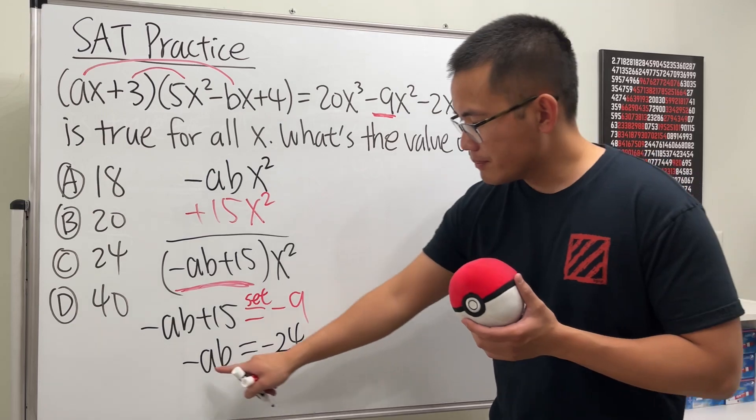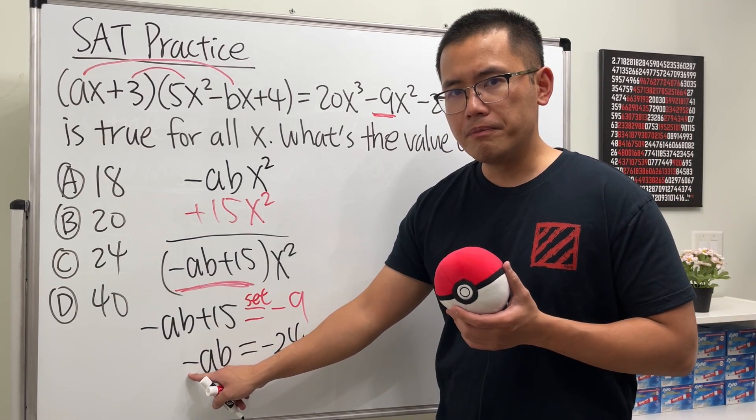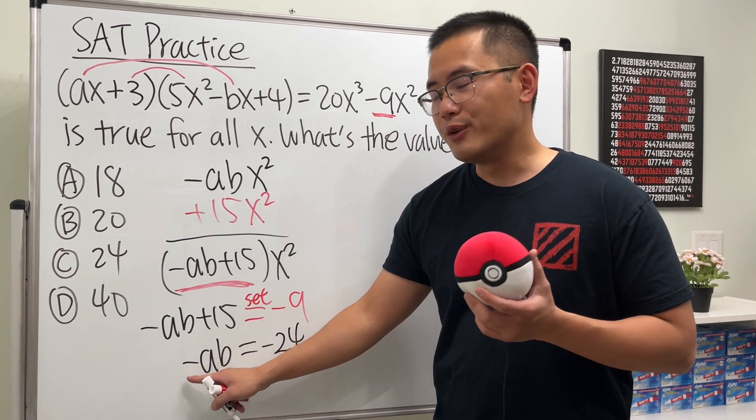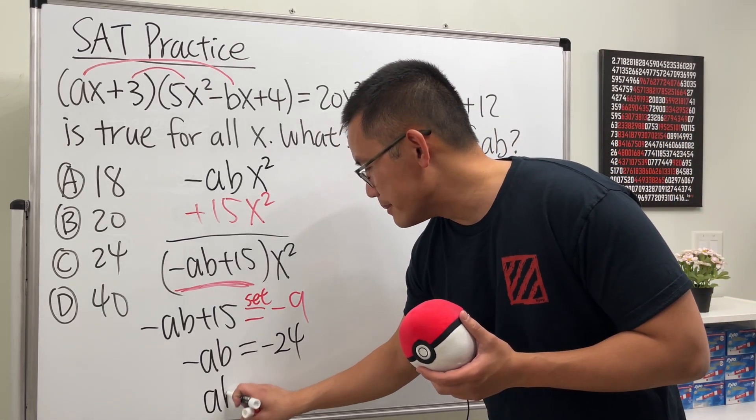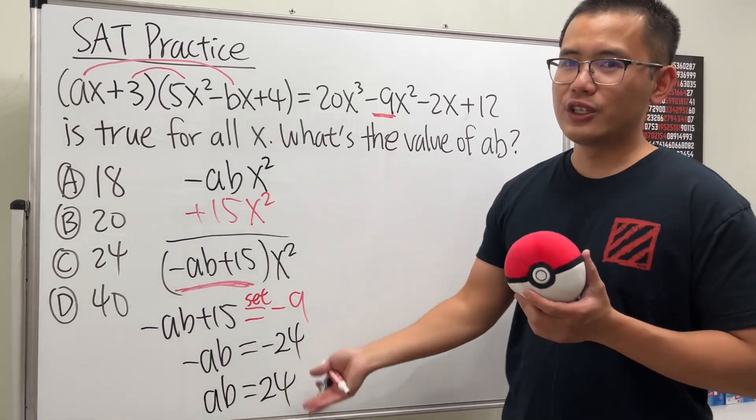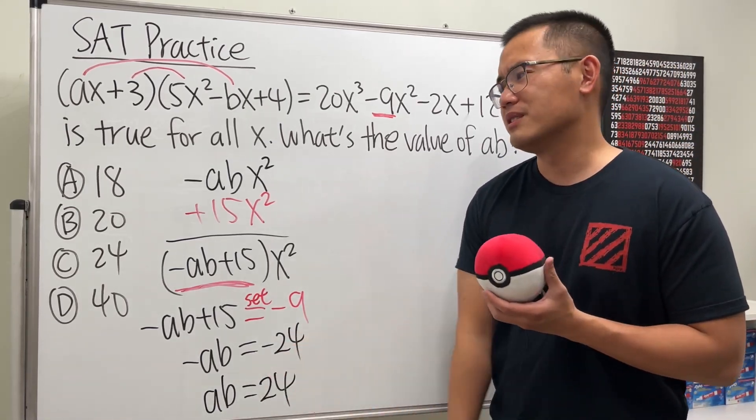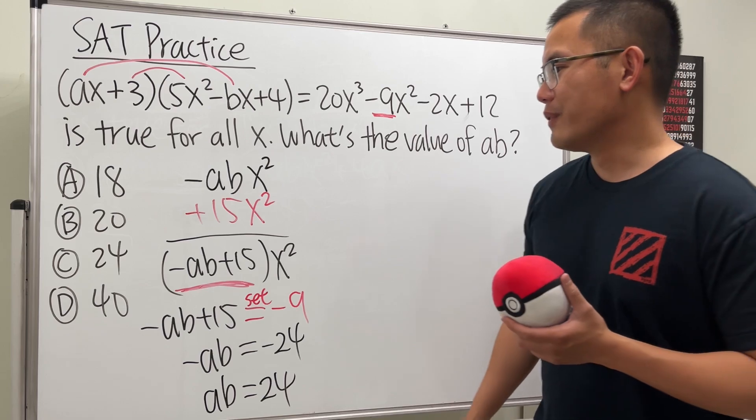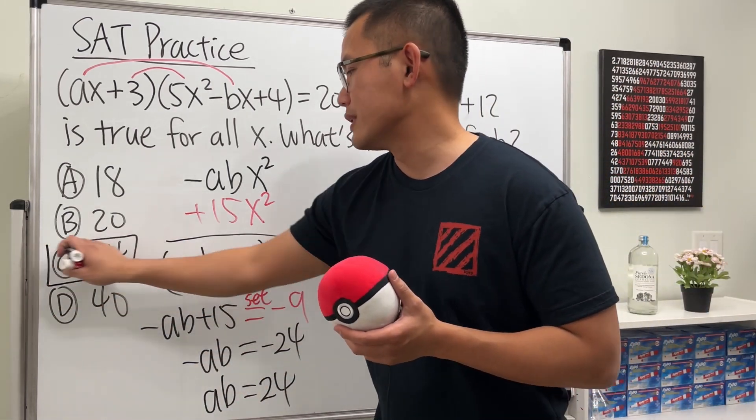And then, after that, this is negative ab. We want positive ab. So, divide both sides by negative 1. We get a times b equals positive 24. Of course, shout out to great Kobe Bryant. Rest in peace, of course. And that's the answer for this question, which is answer choice C.